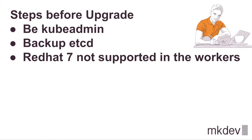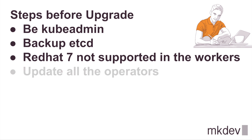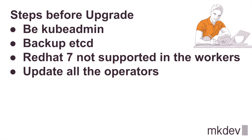Another thing we need to do: because we are going to move to 4.13, we need to remember that support for RHEL 7 workers is removed and the minimum version is RHEL 8. Remember that in the masters we cannot use RHEL 7 or RHEL 8. Also, all your operators need to be up to date — in our case they are, since we are starting from a fresh installation, but remember to update yours.